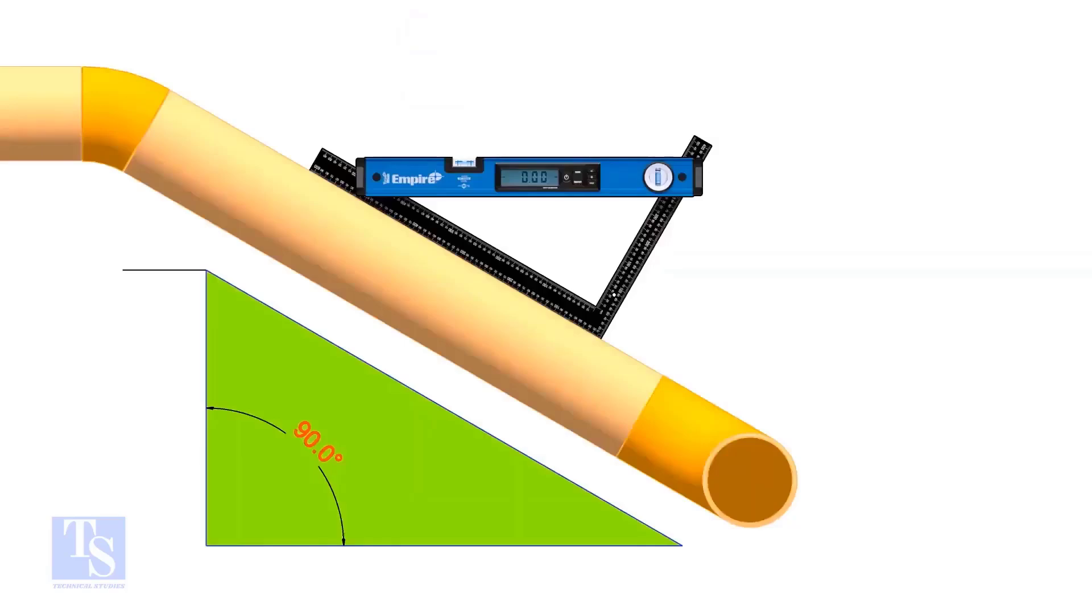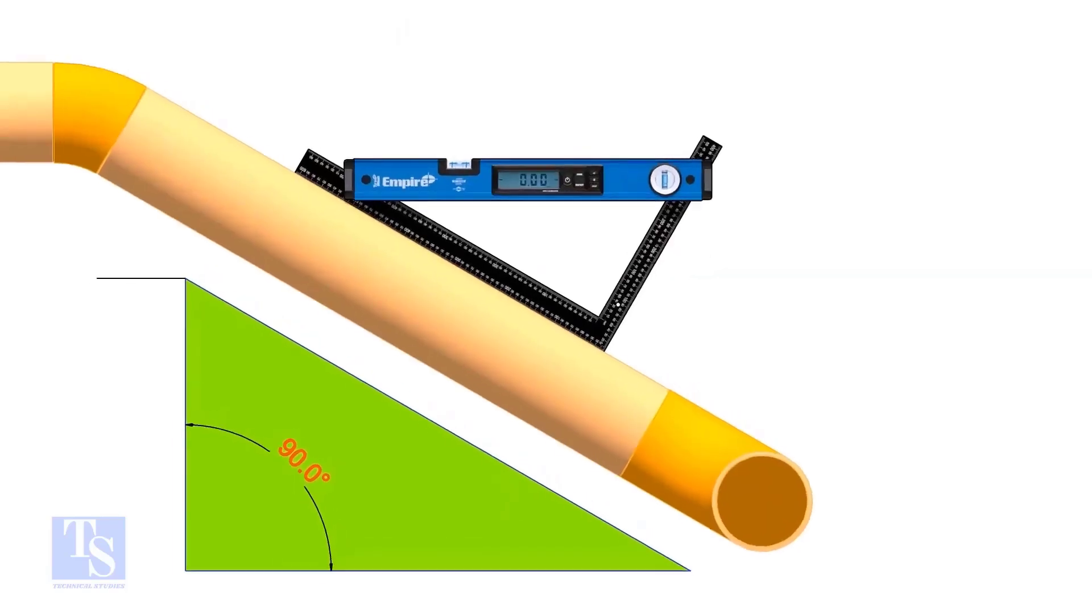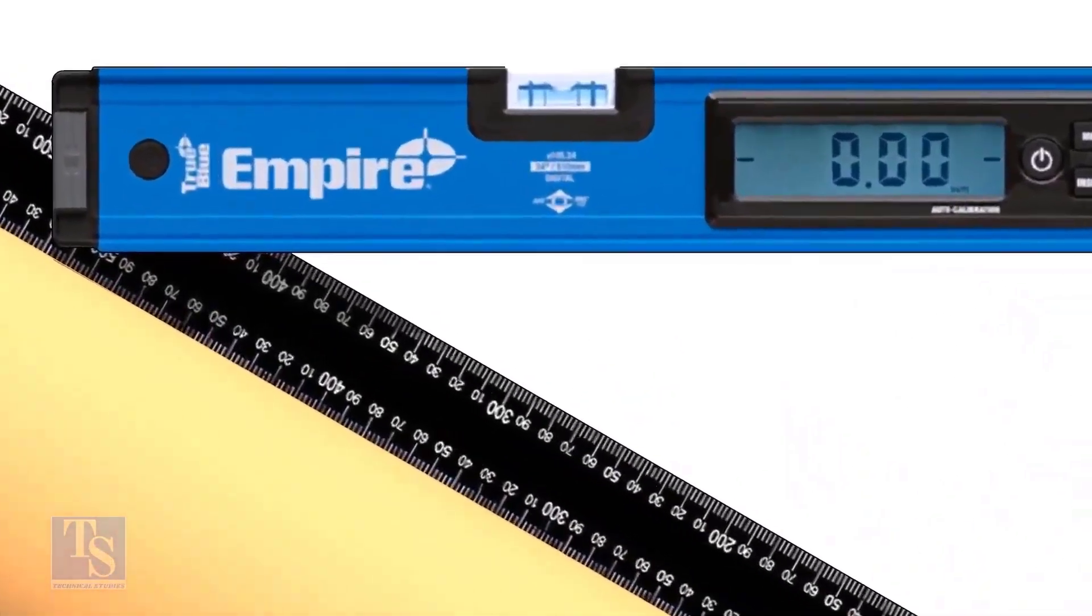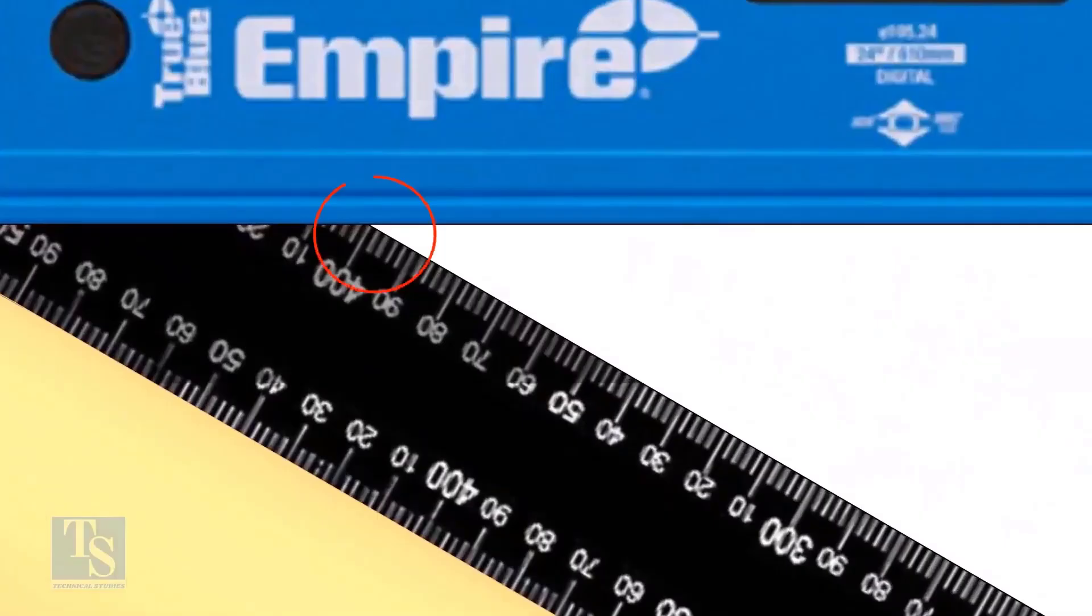Let's try another example. Here, the run equals 400 mm and the set equals 232 mm.